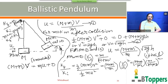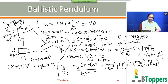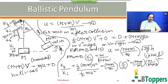In some problems, the height h may not be given directly. Instead, you may be given the length of the string L and the angle θ₀ which the string makes with the downward vertical when the combined mass reaches the highest position. Then h can be expressed as h = L(1 − cos θ₀), where θ₀ is the maximum angle the string makes with the vertical after the collision.